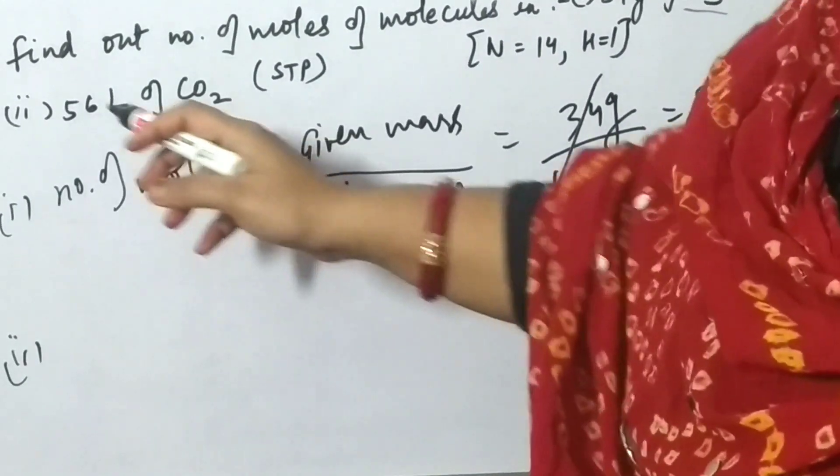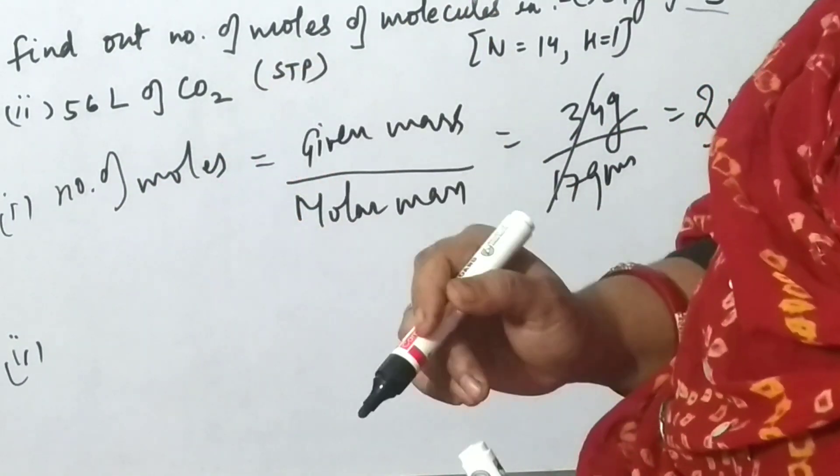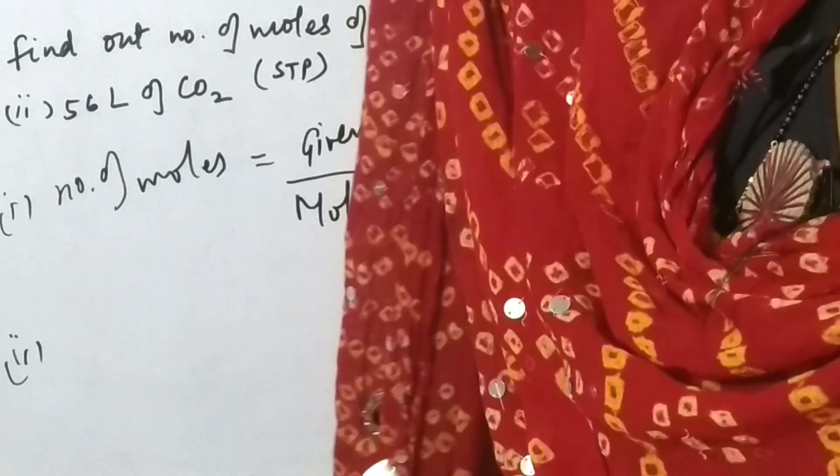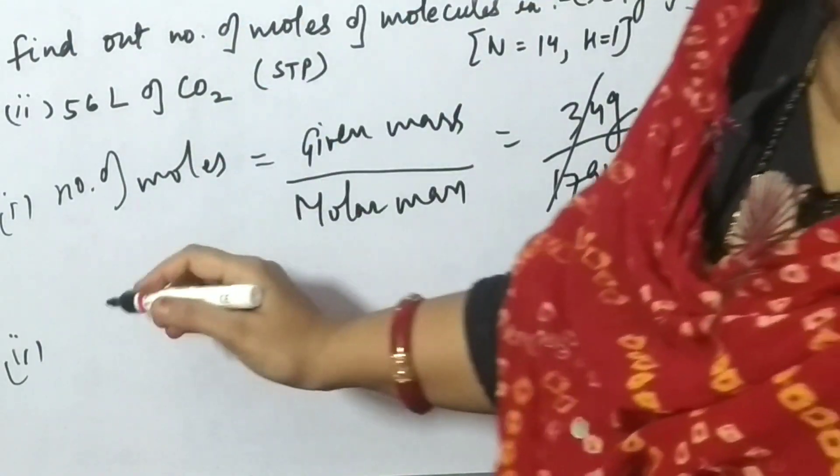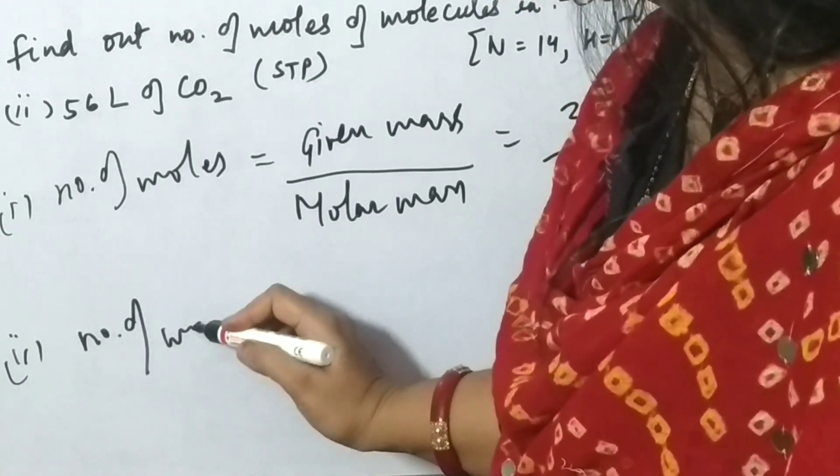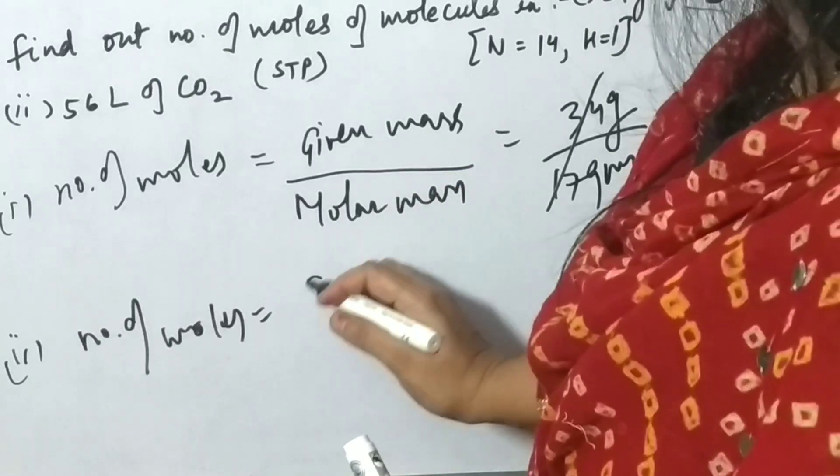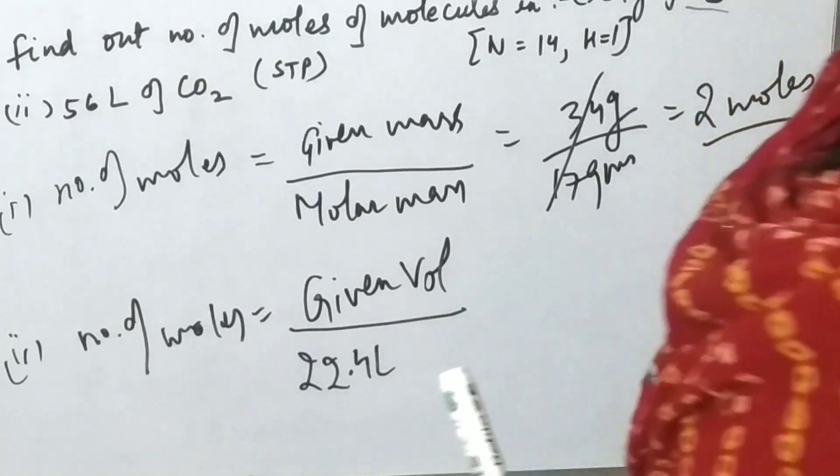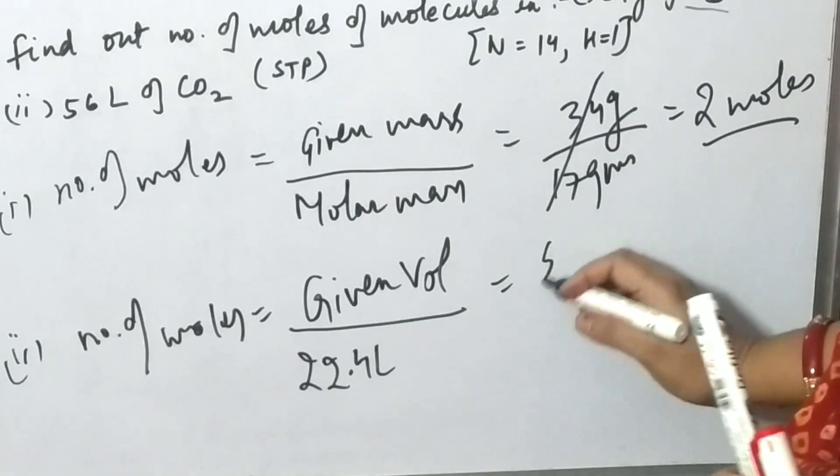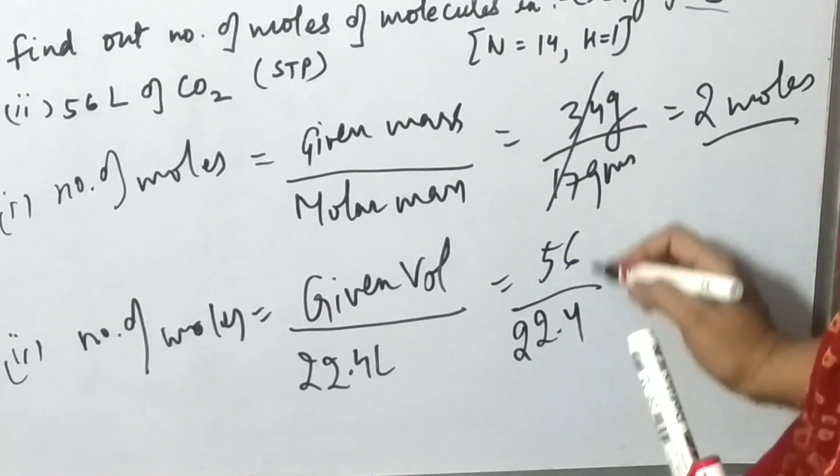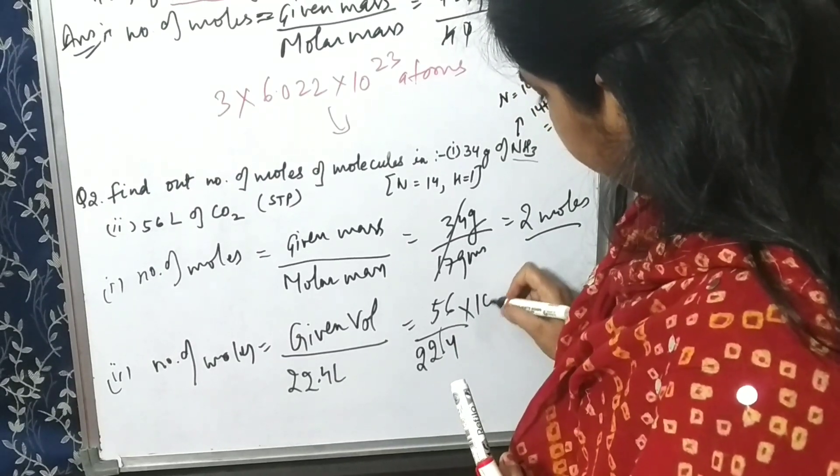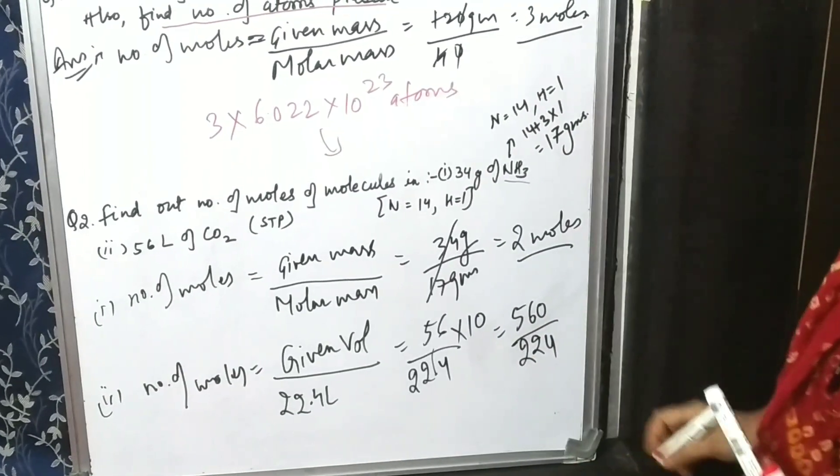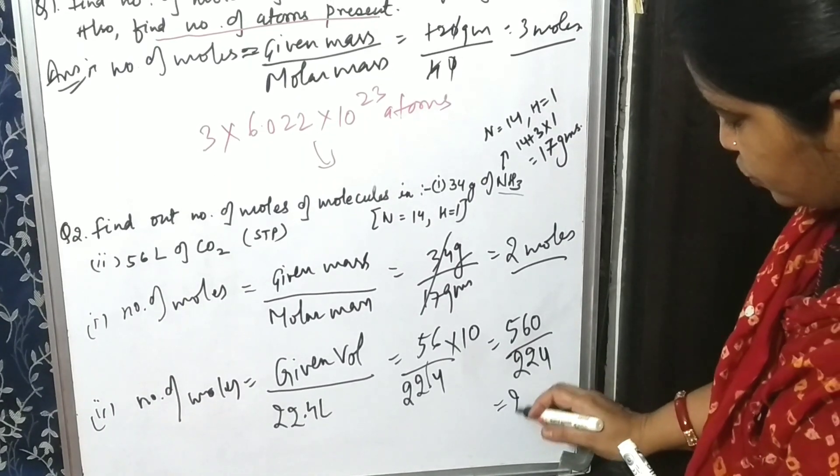What is the difference here? They have given you the volume - 56 liter of CO2. So don't get confused. You have to apply the second formula which I had given you. It will be number of moles equals given volume divided by 22.4 liters. So here the given volume is 56 by 22.4. When you divide this value, you will get about 2.5 moles. So this is how you can calculate and solve your numericals on the basis of these formulas.